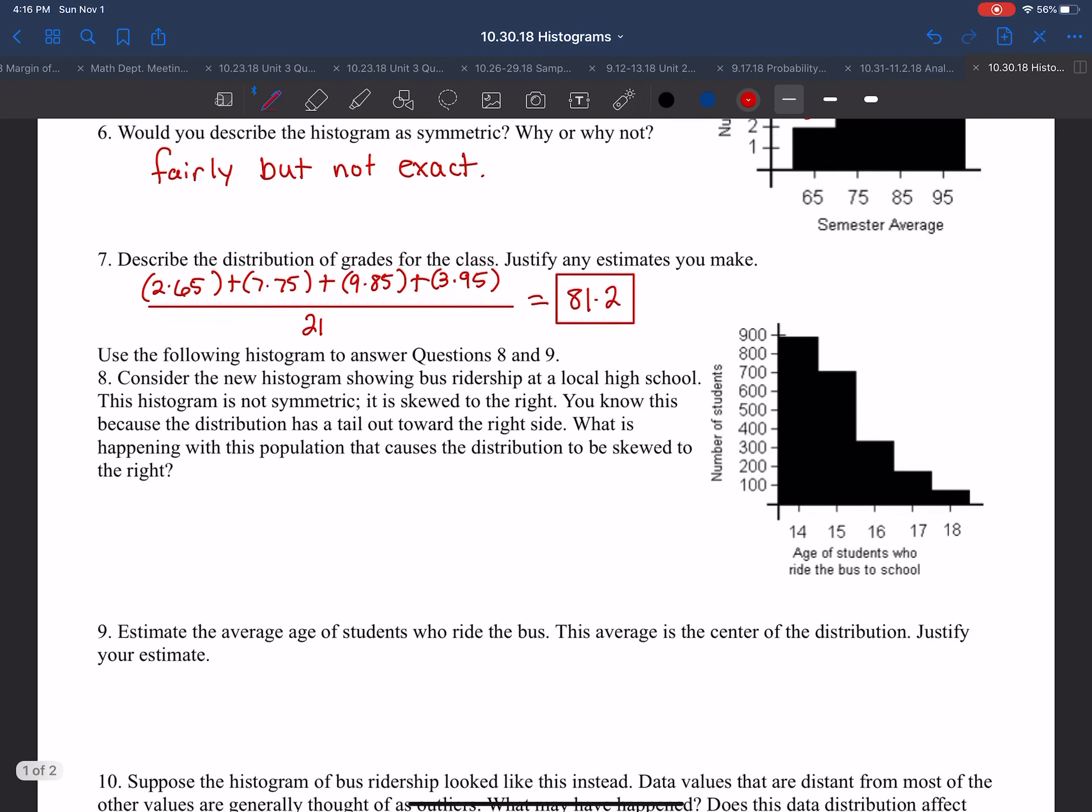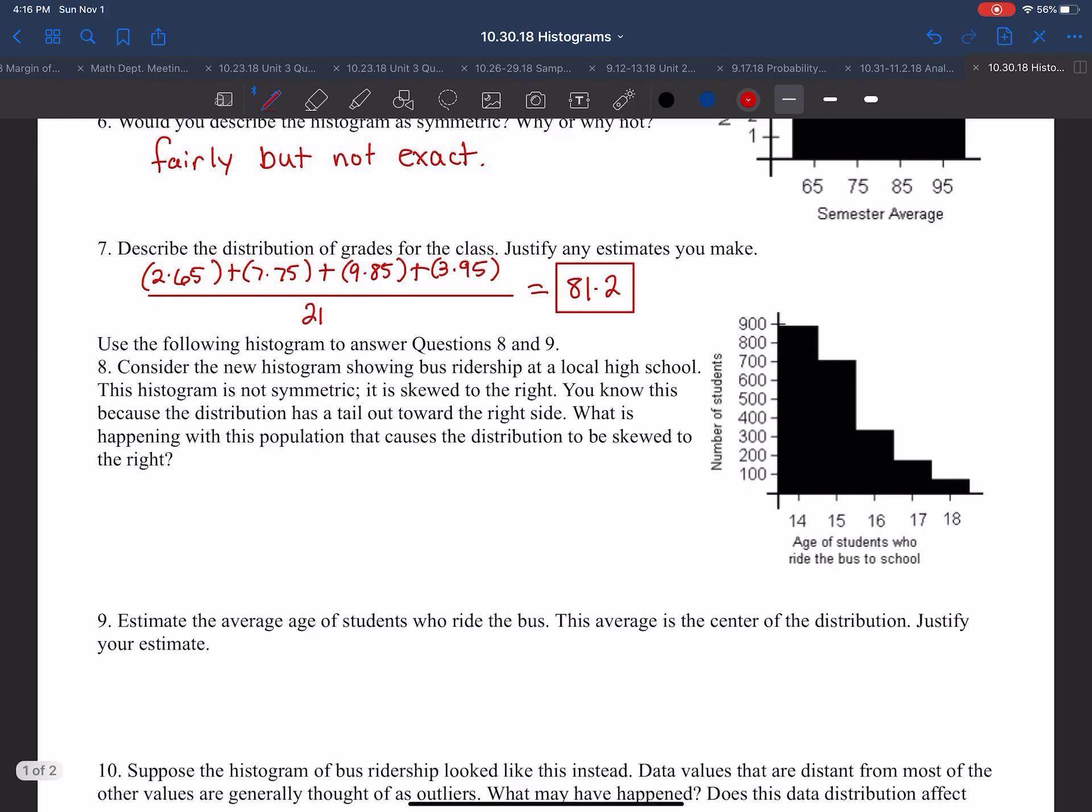The next one says, use the following histogram to answer questions 8 and 9. Consider the new histogram showing bus ridership at a local high school. This histogram is not symmetric. It is skewed to the right. You know this because the distribution has a tail out toward the right side. This one has a lot of data to the left, tail going to the right. So it's skewed right.